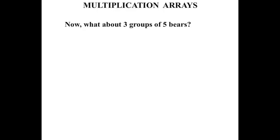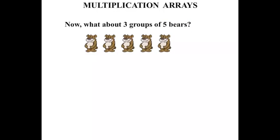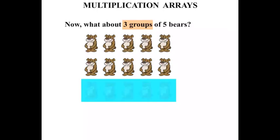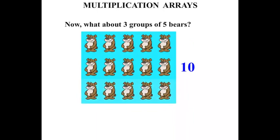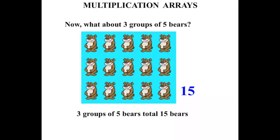Now what about three groups of five bears? So we've got five bears this time in each group: one, two, three, four, five. And this time three groups. So there's our first group, our second group, our third group — we have three groups. Let's count them again, this time in fives. Five, ten, fifteen. So we can say that three groups of five bears total fifteen bears.